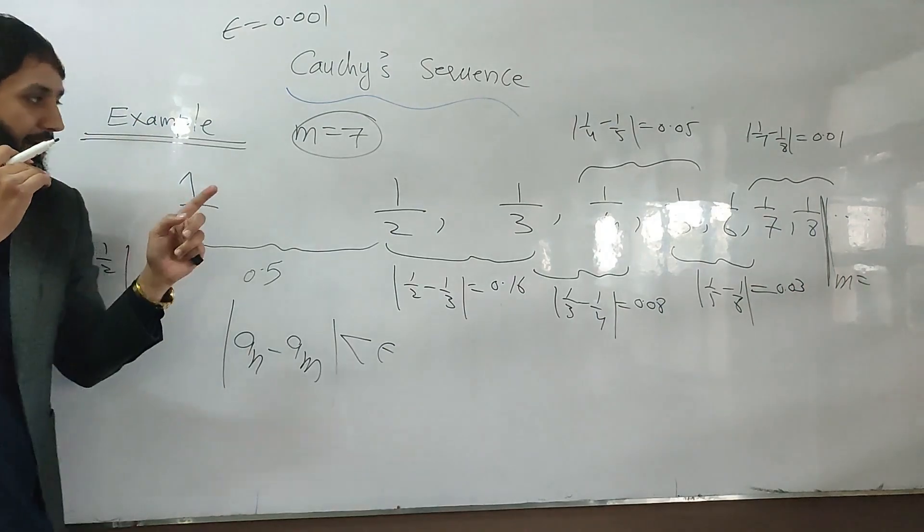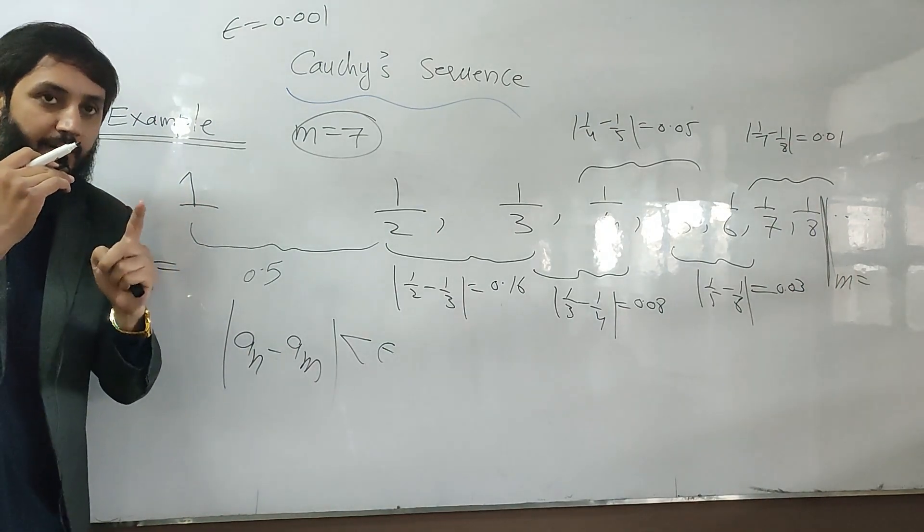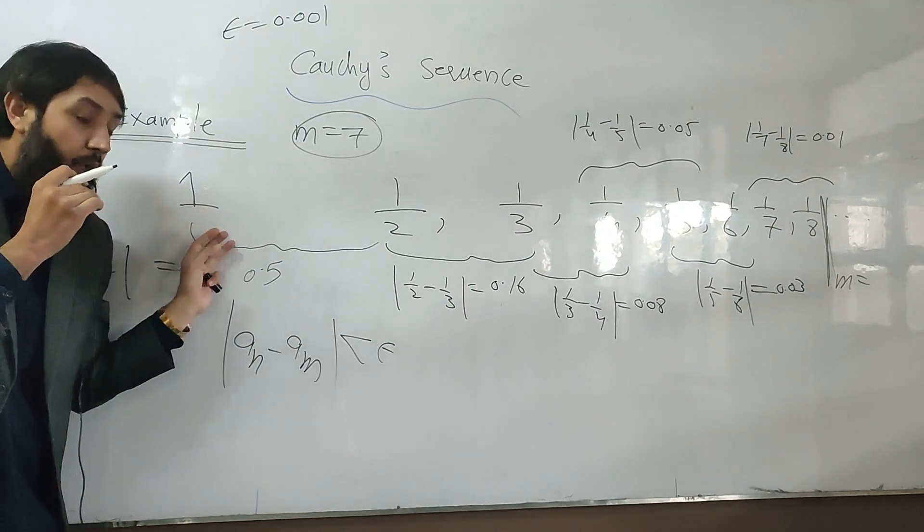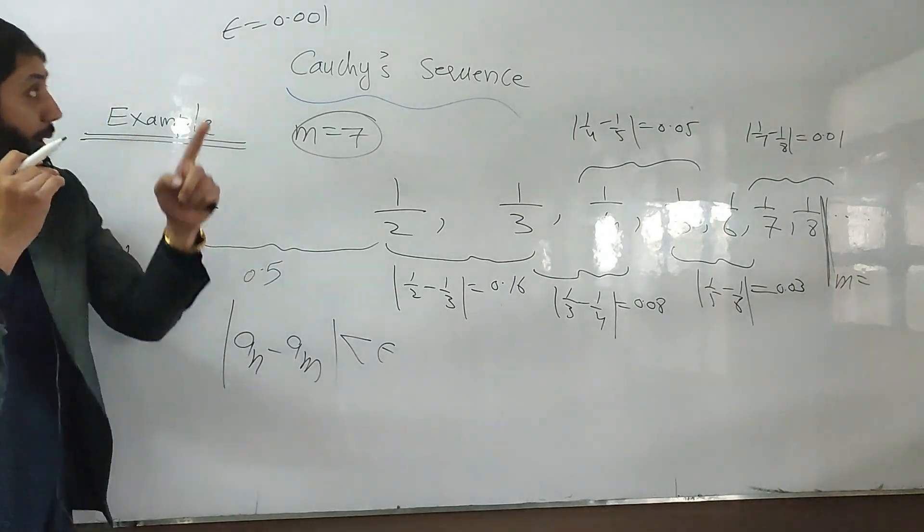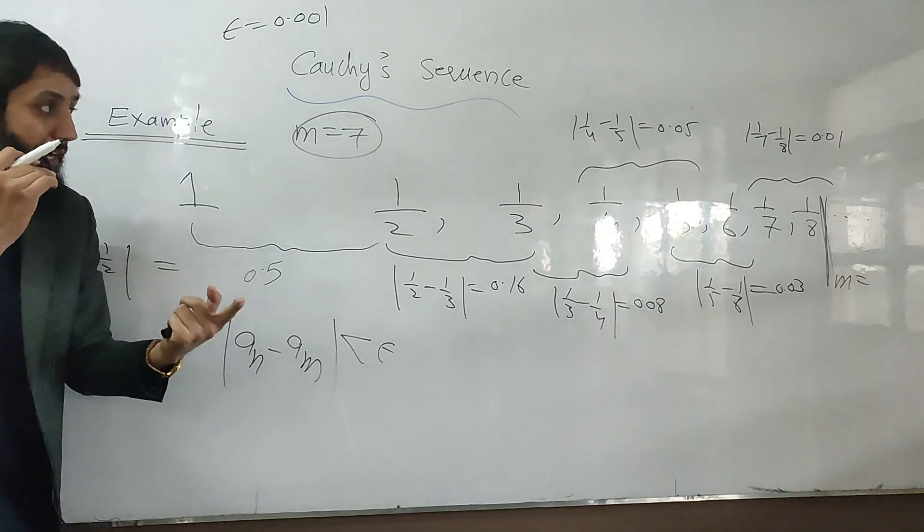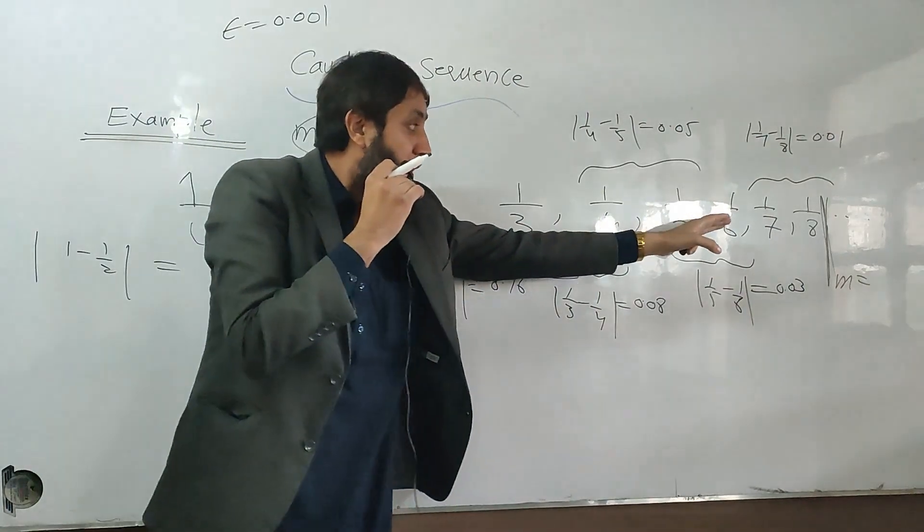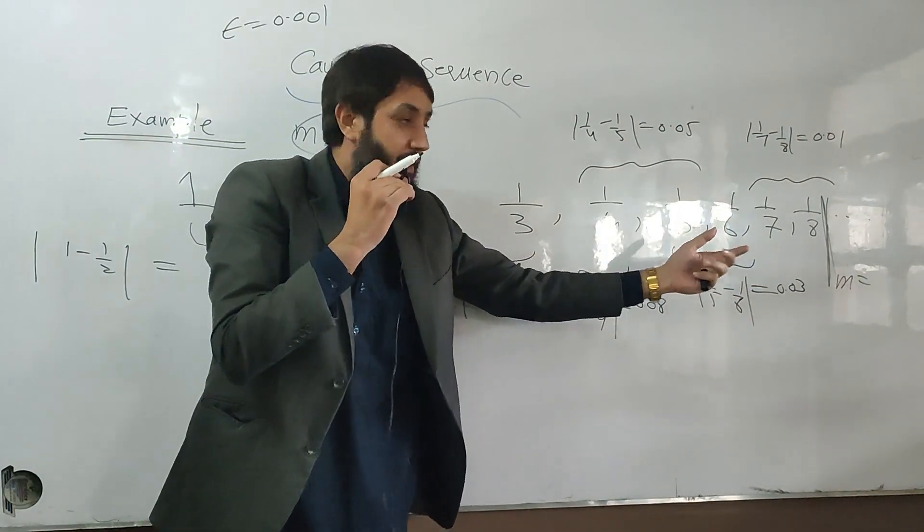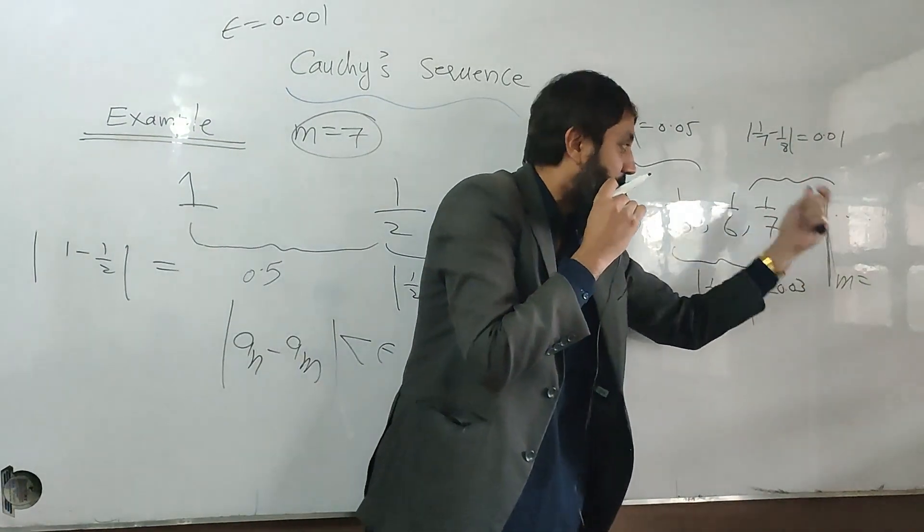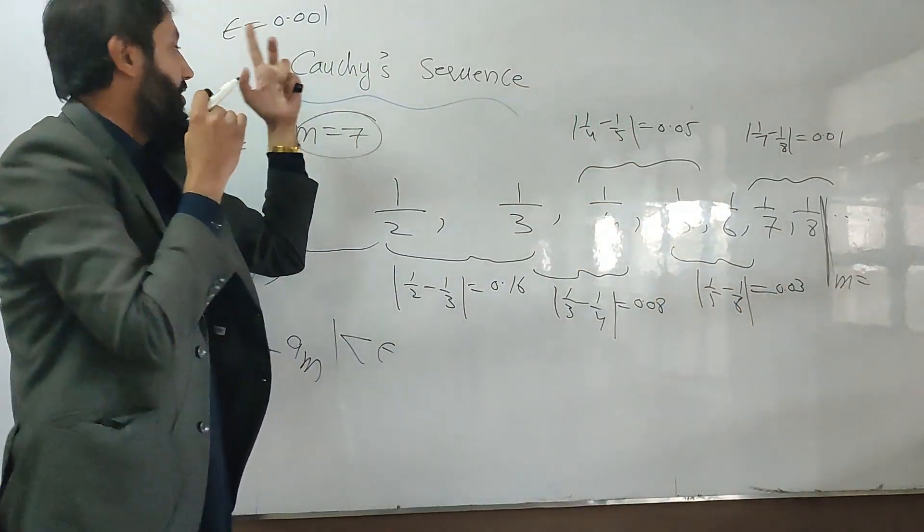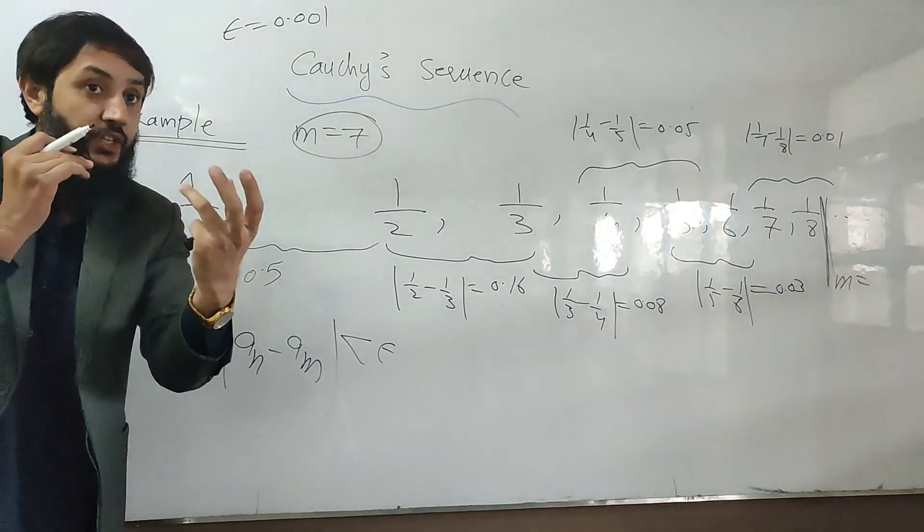So whatsoever, if you have a Cauchy sequence, my dear student, please hear me what I'm going to tell you. If you have a Cauchy sequence, whatsoever epsilon you give me, we will be able to find a term after which the distance between the terms will start less than your margin. This is the definition for a Cauchy sequence.